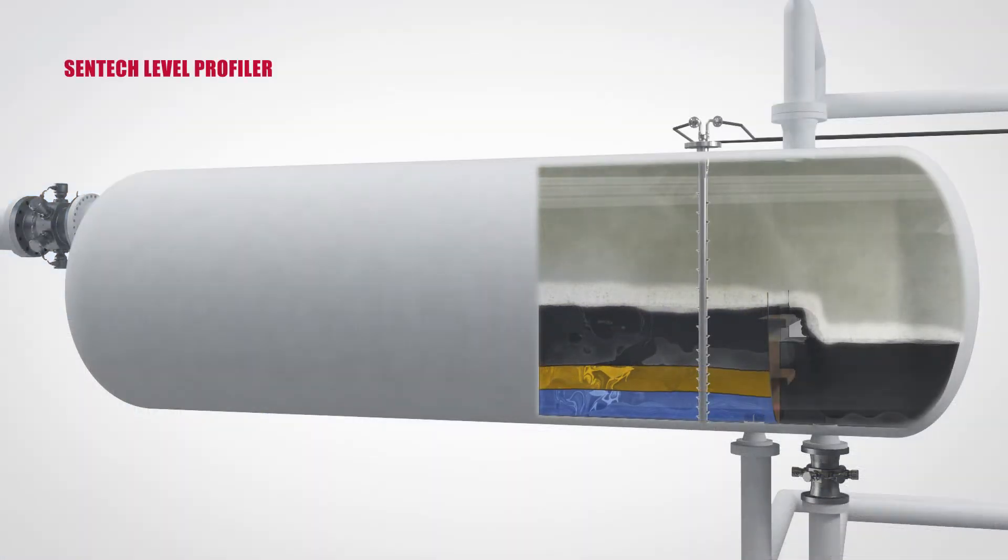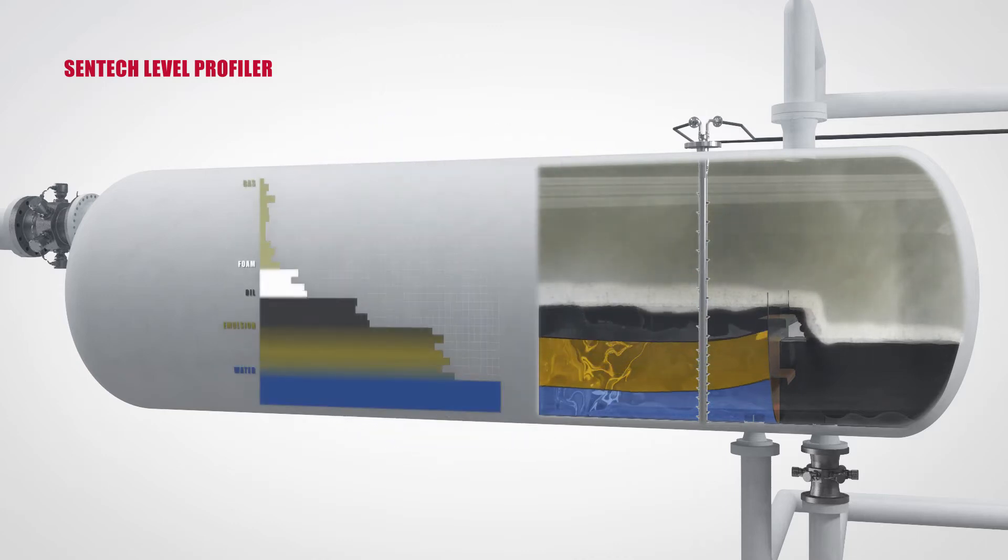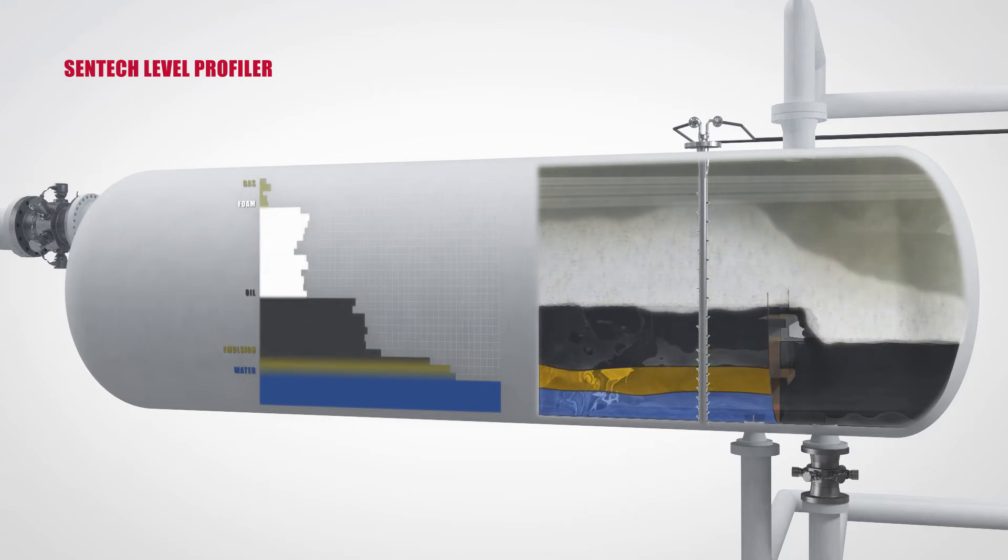The CENTEC Level Profiler utilizes a series of CCAP sensors to generate a real-time, high-resolution profile of the gas, foam, oil, emulsion and water layers inside separators. This virtual vision allows operators to prevent upset conditions and immediately see the effect of their efforts to optimize separation and oil throughput.